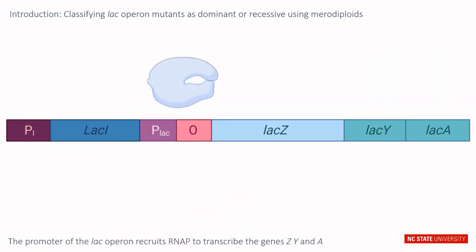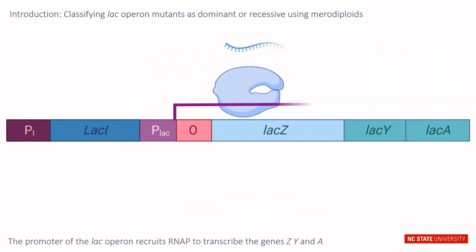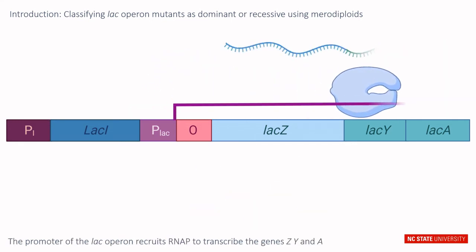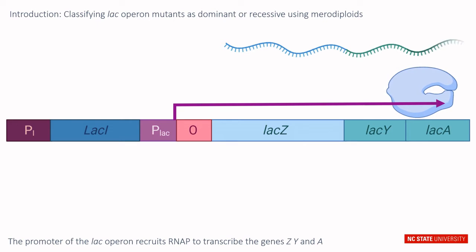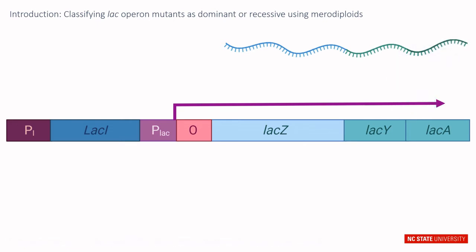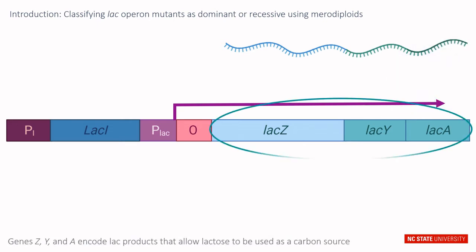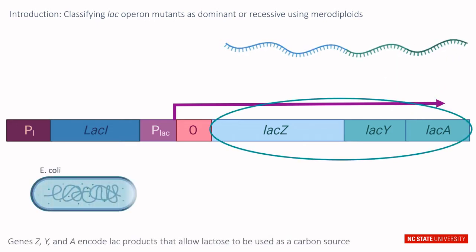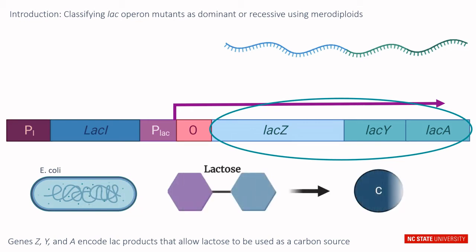The promoter of the lac operon recruits RNA polymerase to transcribe structural genes Z, Y, and A. Genes Z, Y, and A encode lac products that allow E. coli to use lactose as a carbon source.